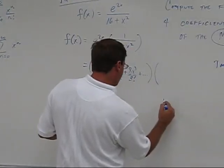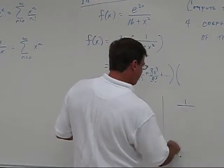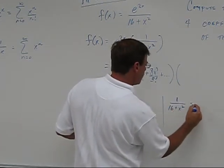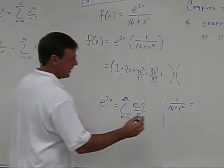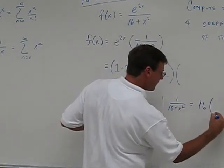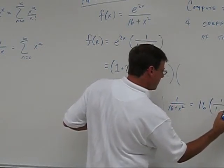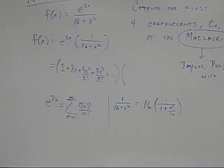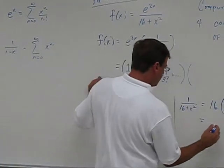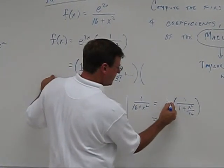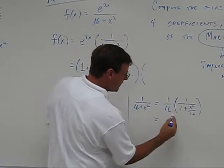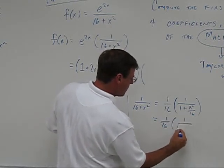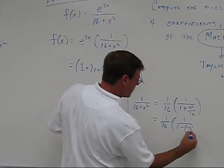So let's work on that one. So, 1 over 16 plus x squared, I'm going to rewrite that with a 1 out in front, so let's factor the 16 out. 1 over 1 plus x squared over 16, and then I need to have a minus, so I'm going to rewrite that one more time as 1 over 16. I'm going to rewrite this as 1 over 16 times 1 over 1 minus negative x squared over 16.